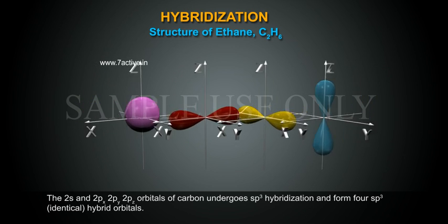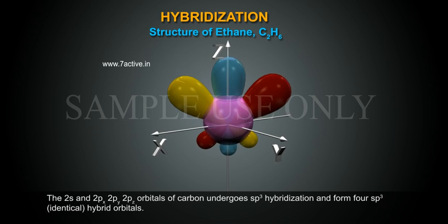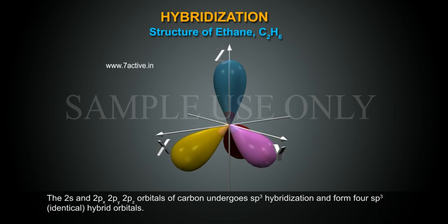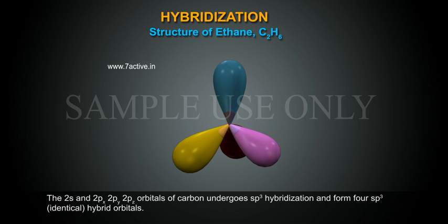The 2s and 2px, 2py, 2pz orbitals of carbon undergo sp3 hybridization and form 4 sp3 identical hybrid orbitals.